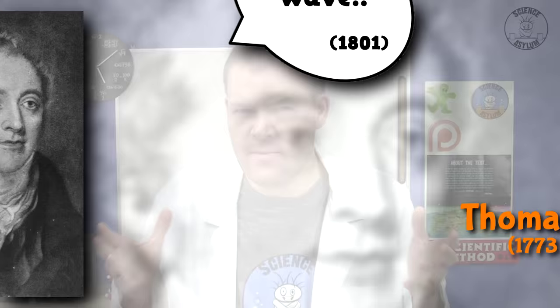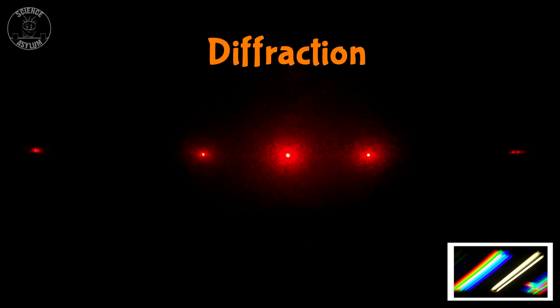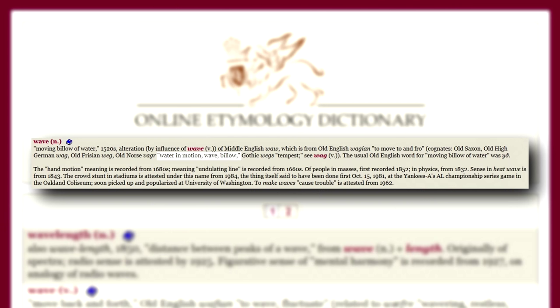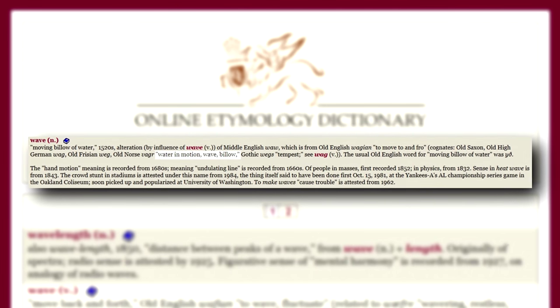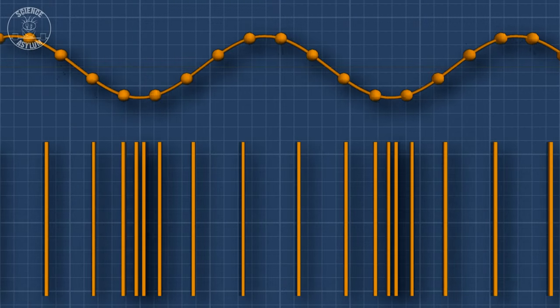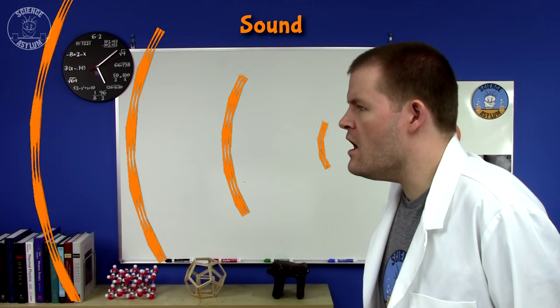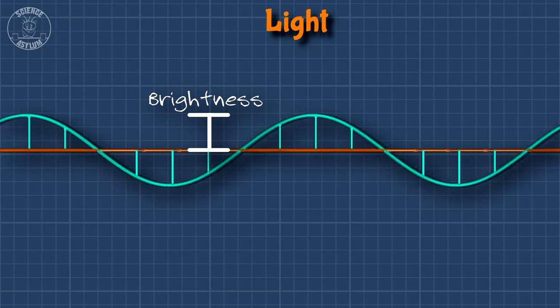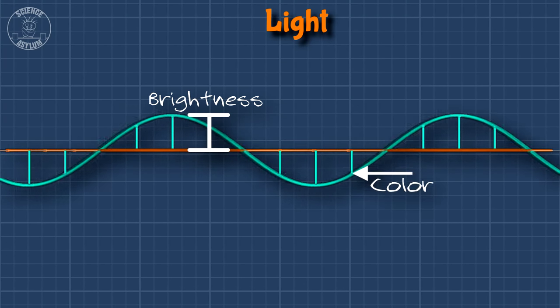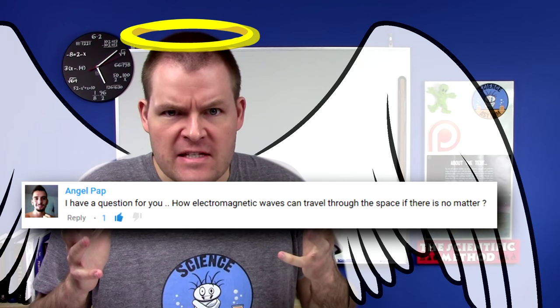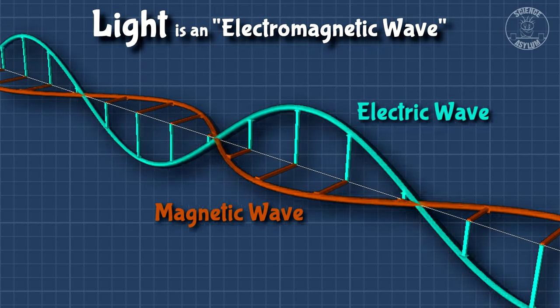This was proven by Thomas Young in 1801 using diffraction. When you hear the word 'wave,' you probably think of water waves — that's actually where the word comes from. But lots of things can wave; you just have to get matter to move back and forth repeatedly. If it happens in the earth, you call it an earthquake. If it happens in the air, you call it sound. For light, amplitude measures brightness and frequency measures color. But light travels through empty space where there isn't any matter — that's because light isn't a wave in matter; it's an electromagnetic wave.